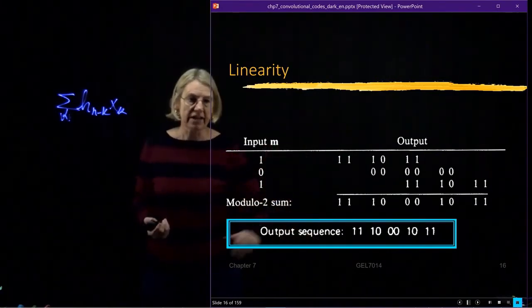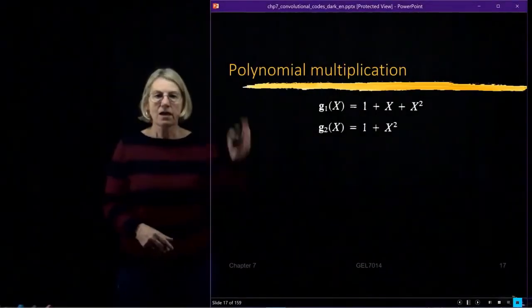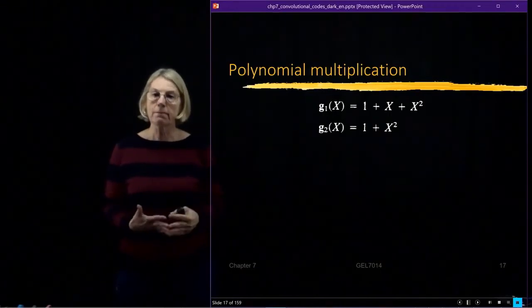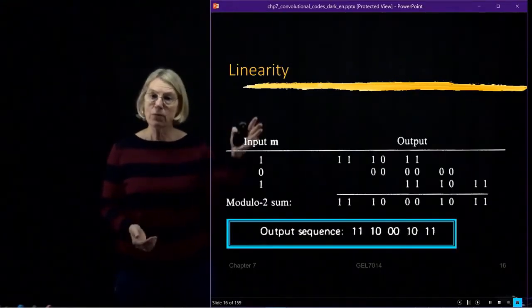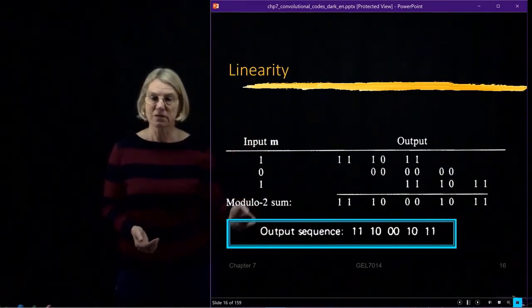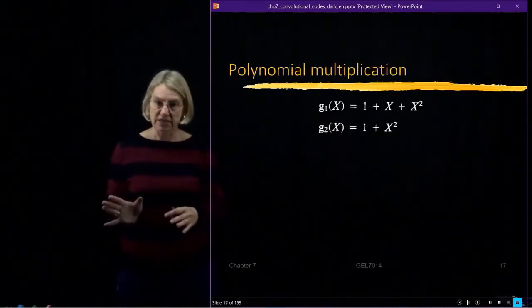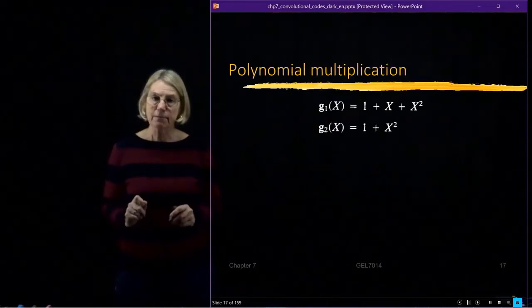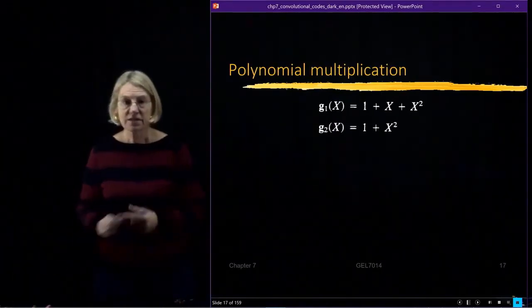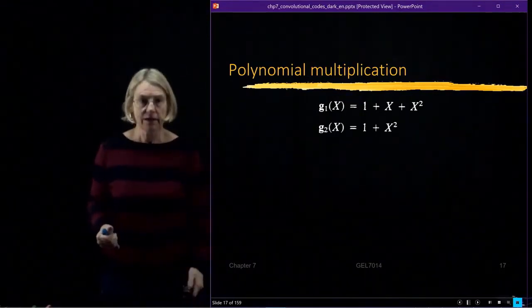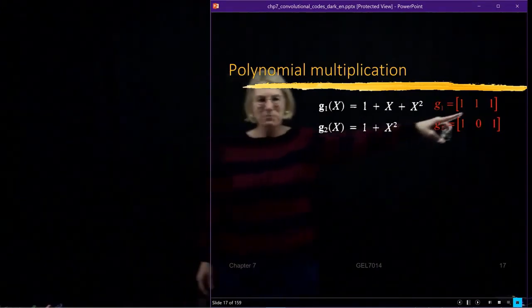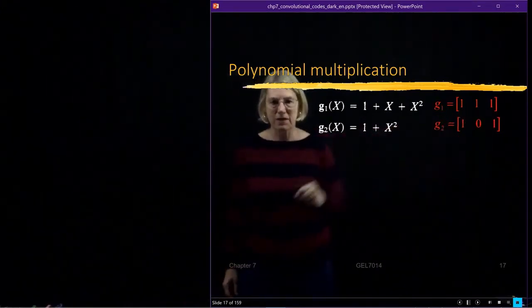So this is our encoder. So for our encoder, suppose we want to represent it as a polynomial multiplication. We saw here we could represent it as a convolution with the impulse response. Now I'm going to have another mathematical representation. And in this case, I'm going to use my vectors. My vectors, if you recall, this one was, there it is already. One, one, one was my vector. And one, zero, one was my vector.